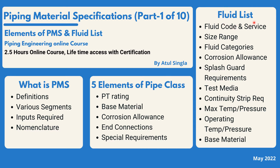The fluid list is the most basic and important input required to develop any PMS for a process industries project. All the parameters required to develop a PMS come from this deliverable. We will cover fluid code, what services are there, size ranges applicable for a particular project, and fluid categories — including how fluids are categorized, what is hazardous, toxic, or any other criteria to define fluids in a particular project.